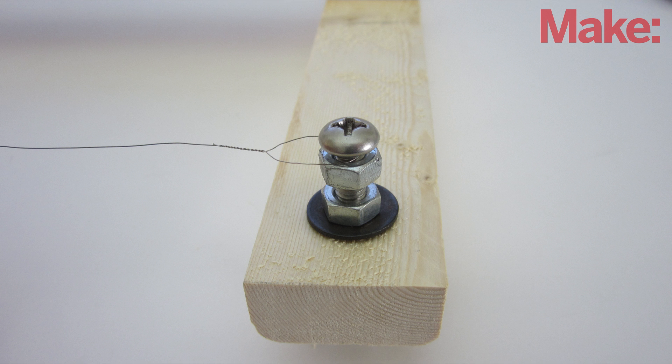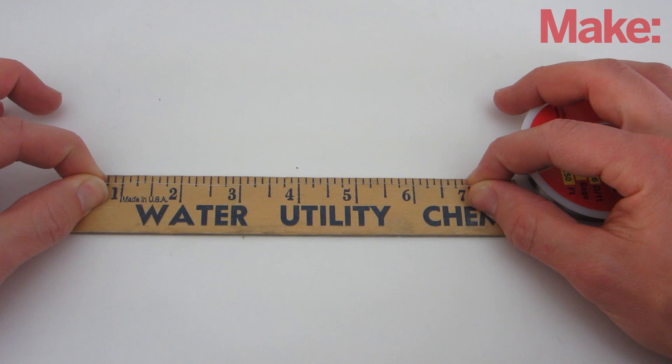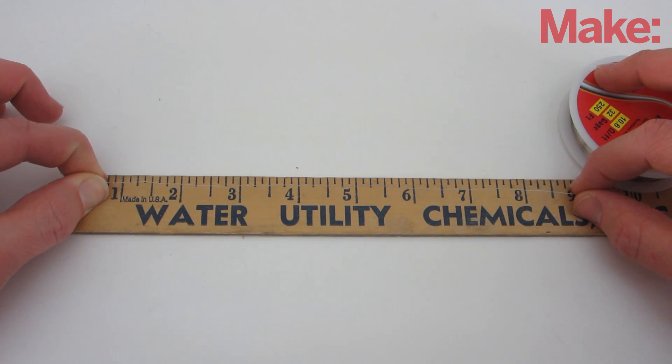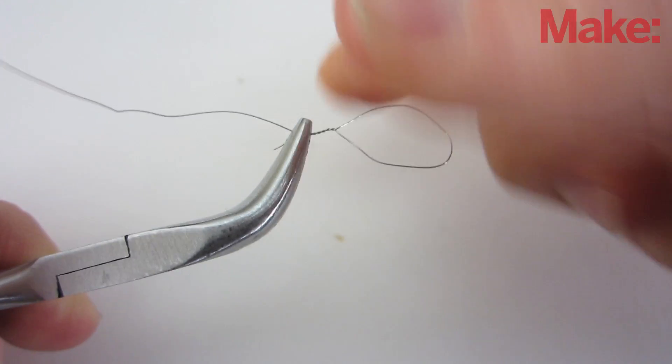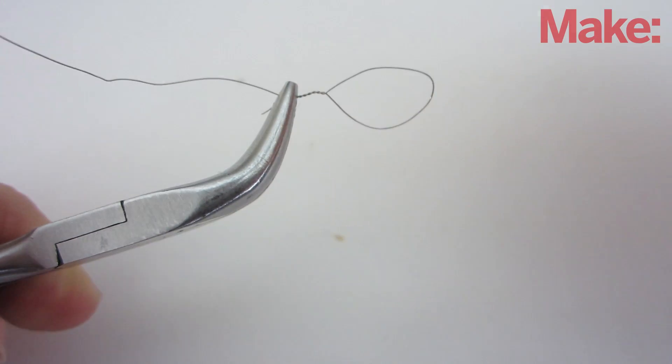Once you've selected a power supply, you're ready to hook up the cutting wire. Take the length of wire that you just calculated and add two inches to it. Cut off this length of wire. On each end, make a loop and twist the wire against itself to make a strong connection.